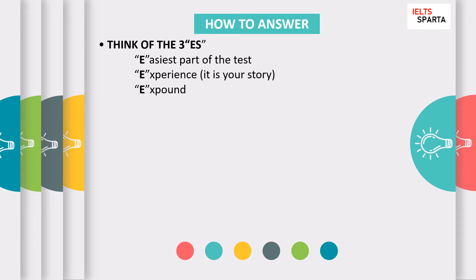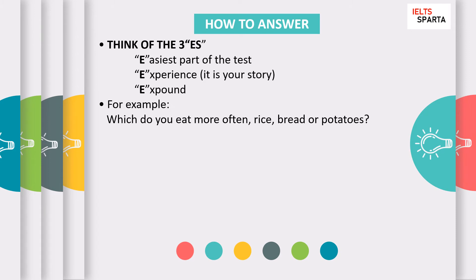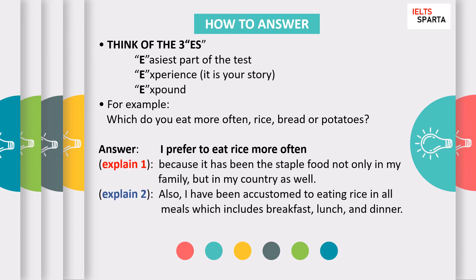The third E is that all you need to do after thinking of your answer is simply expound it with one or two sentences. Be direct with your answer — no need for long introductions. Be natural and direct. For example, the question 'Which do you eat more often: rice, bread, or potatoes?' is familiar since we eat every day. My answer: 'I prefer to eat rice more often, because it has been the staple food not only in my family but in my country as well. I have been accustomed to eating rice in all meals — breakfast, lunch, and dinner.'